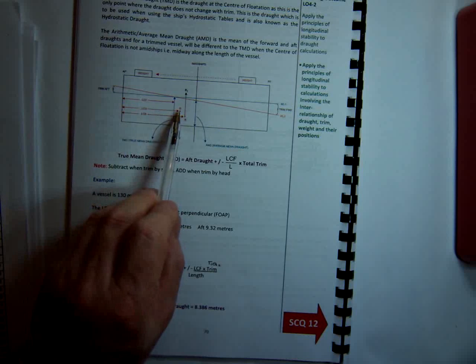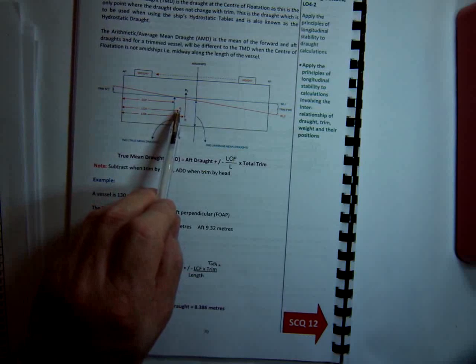And how we get that is much the same as we get the kg of the vessel, in other words the centre of gravity of the vessel from the keel. And what we do, we have a weight times the distance, gives us moments, and we add, subtract the moments accordingly, get the total moments divided by the final displacement, and that gives us our final LCG.